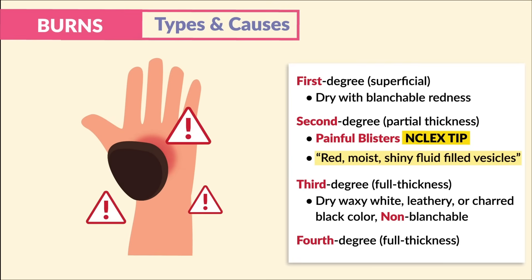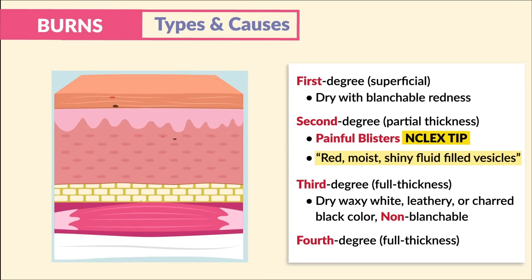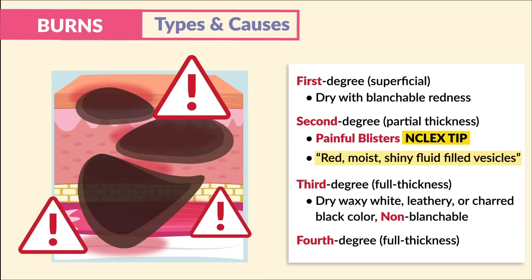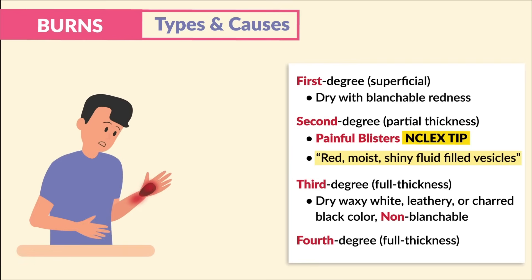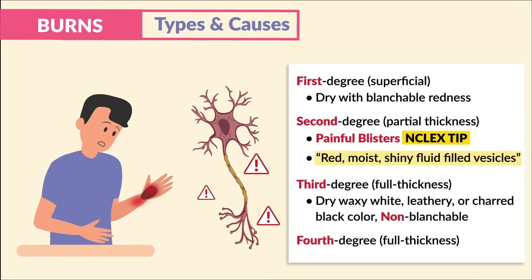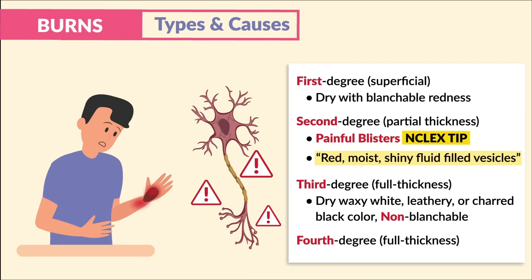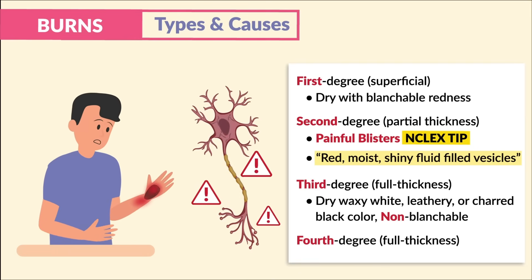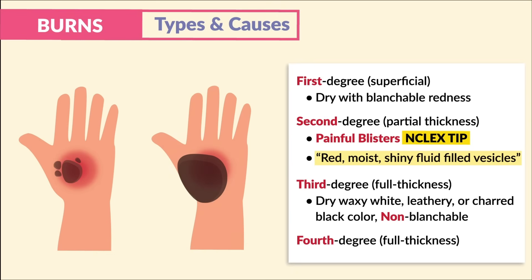Fourth degree burns are also full thickness burns and the worst burns by far. They go through all the layers of skin down to the muscles and even the bones. A unique sign is the lack of pain due to destruction of nerve endings from all the burn-charred areas. Even though they may look similar to third degree burns, these are far worse since they're far deeper.